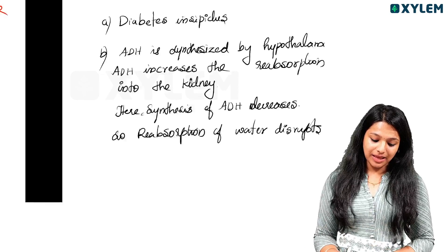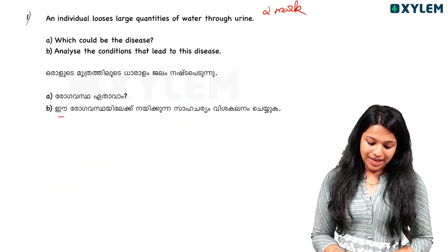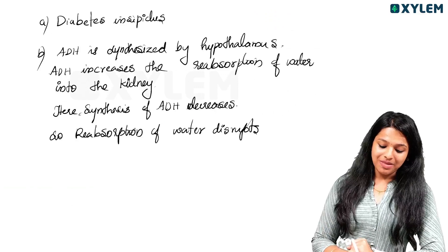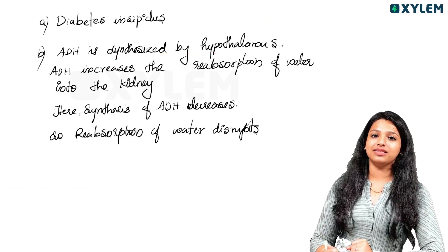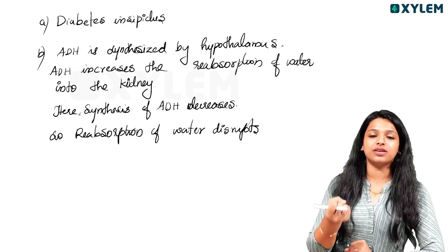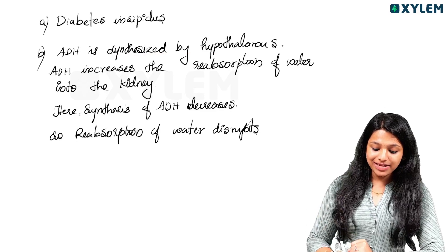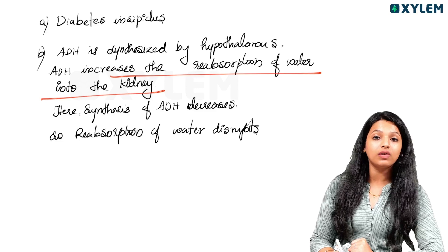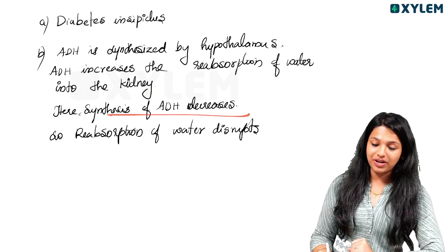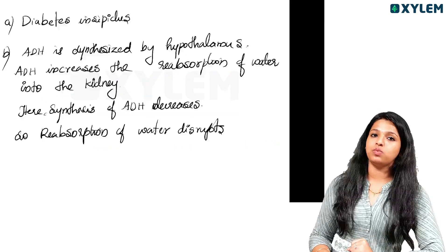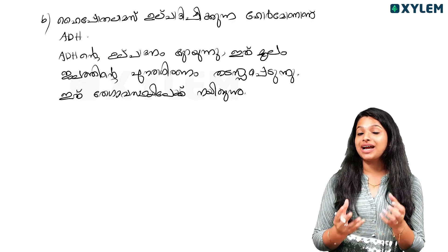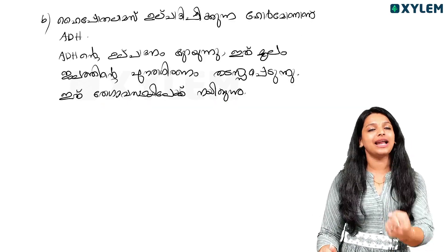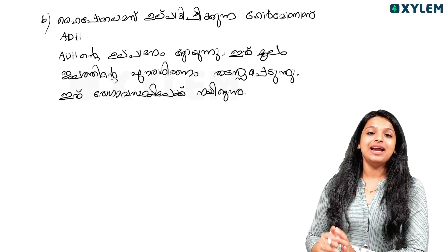Now, if you are doing this disease, then what is the question about ADH? We have to control the reabsorption of water. So ADH is synthesized by the hypothalamus. ADH increases the reabsorption of water into kidney. Here synthesis of ADH decreases, so absorption of water disrupts. This is a drug issue. We are talking about Diabetes Insipidus, not Diabetes Mellitus.